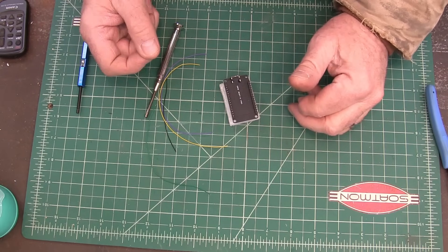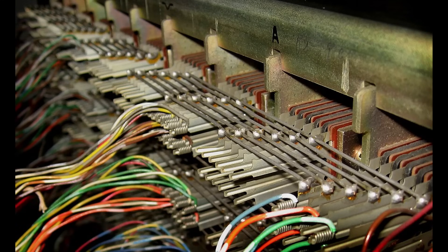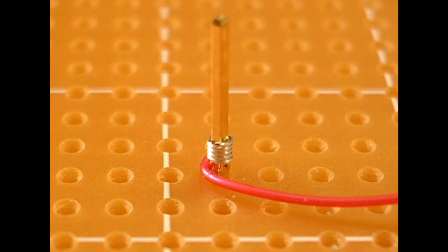Now, wire wrapping is a way that they used to put mainframe computers together. It's been around for a really long time. Very few people do it nowadays, and a lot of people have never even heard of it. So that's why I thought I'd do this video.